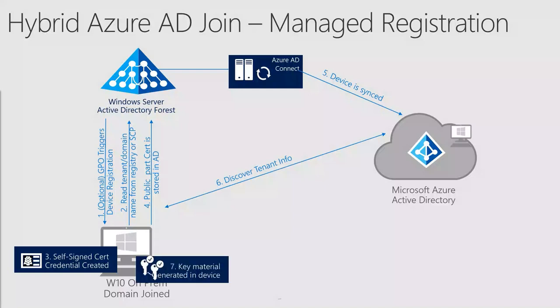In order to bootstrap the device into Azure AD, cryptographic material for the device key and transfer key are created on the device's Trusted Platform Module, also known as TPM. The public part of the device key and the transfer key, along with a certificate request, are sent to Azure AD with the previously issued token. In step eight, the workstation is referred to Azure Device Registration Service, also known as DRS, to register the device.